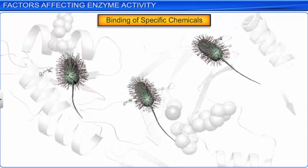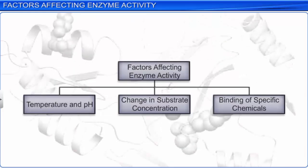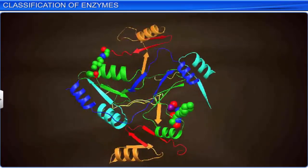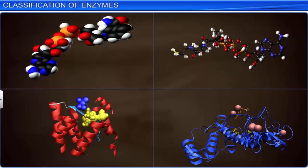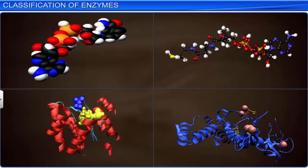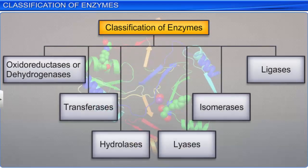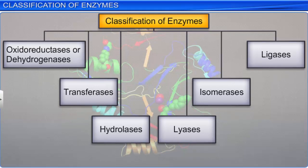Thus, enzyme activity depends on physical factors such as temperature and pH, and chemical surroundings such as substrate concentration and the binding of specific chemicals. Scientists have discovered and studied numerous enzymes. Depending on the types of reactions they catalyze, enzymes have been divided into six classes: oxidoreductases or dehydrogenases, transferases, hydrolases, lyases, isomerases, and ligases. Each of these classes is further divided into four to thirteen subclasses named by a four-digit EC number.